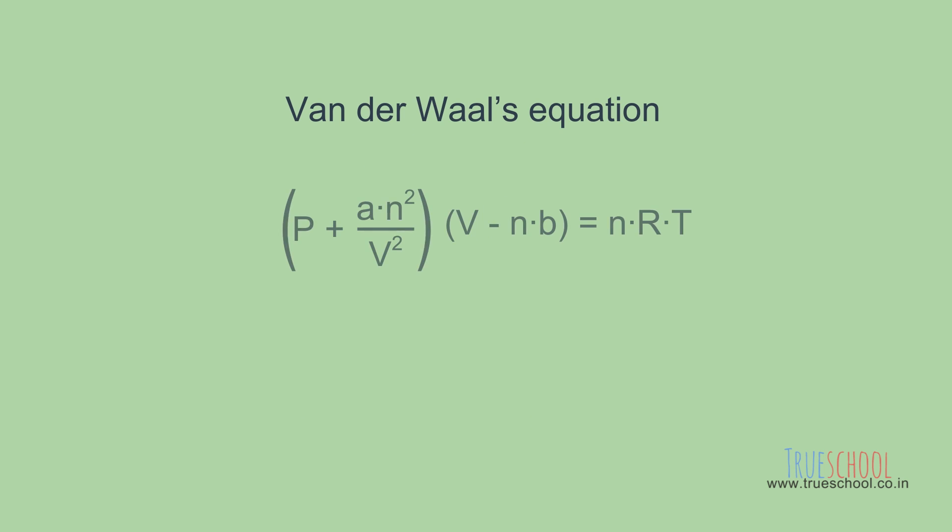We use Van der Waals equation to relate the pressure and volume of a real gas. Look at the two correction factors used in this equation. A and B are found experimentally such that the nature of any particular real gas fits in this equation. Hence A and B are different for different gases.